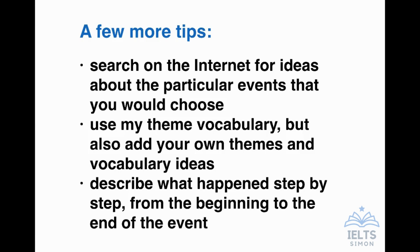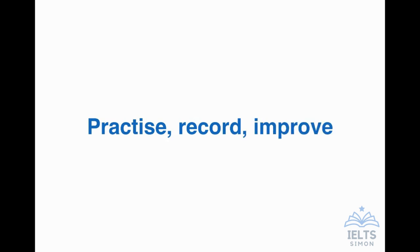Describe what happens step by step from the beginning to the end of the event. For this topic, it's really useful to have a story that goes in order from the beginning to the end, because events happen in that way. You can describe step by step what happened and it should be very easy to fill the two minutes with that kind of description. When you've prepared some good vocabulary, your themes and your examples, you're ready to practice. You should record yourself because then you can write down what you said, analyse it, and try to improve your description. Make sure you're using as much good vocabulary as possible.